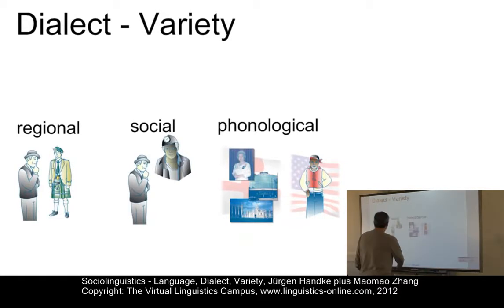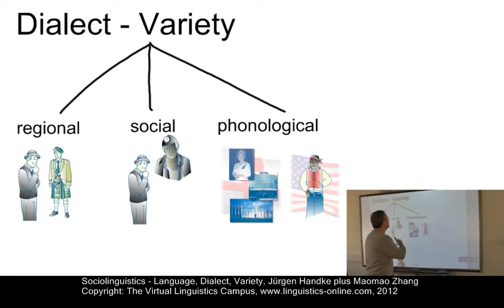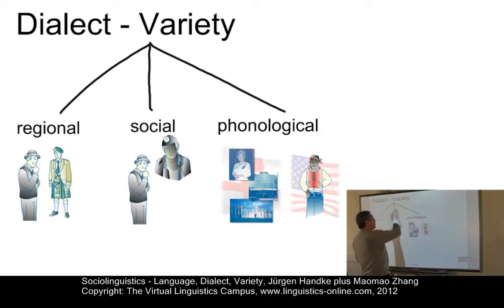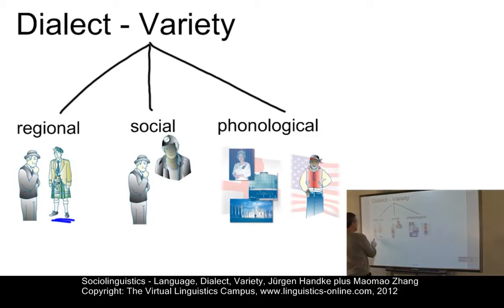In fact, there are three main types of variety or dialect — both terms are used as head terms for several types. We have regional dialects, social dialects, and phonological dialects — or equivalently, regional varieties, social varieties, and phonological varieties. What is a regional dialect? This is illustrated here by the Scottish versus English speaker.